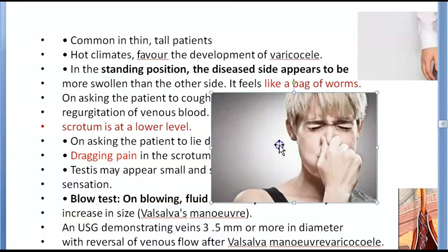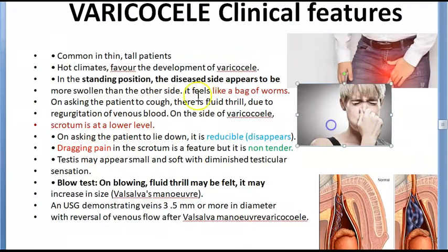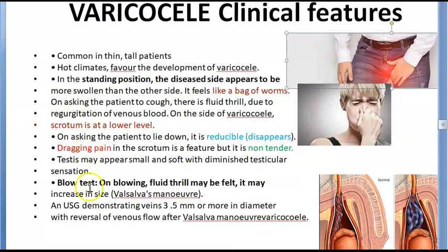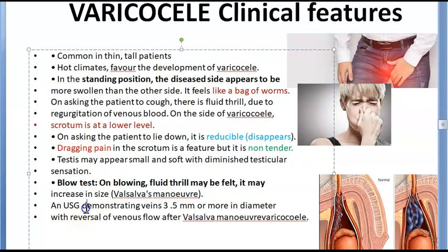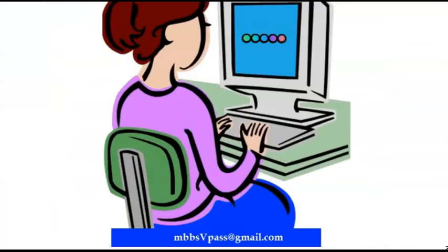On the blow test — the Valsalva maneuver — a fluid thrill may be felt and there is an increase in size of the varicosities. On ultrasound, veins of 3.5 mm or more in diameter are seen, with reversal of venous flow after the Valsalva maneuver. These are signs the doctor observes, while dragging pain and swelling are symptoms reported by the patient.